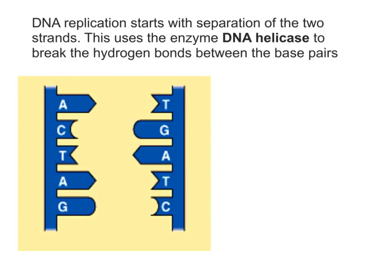DNA replication starts with the separation of the two strands. This uses the enzyme DNA helicase to break the hydrogen bonds between the base pairs. This exposes the bases and both strands can act as a template for replication.